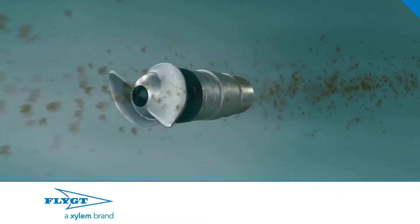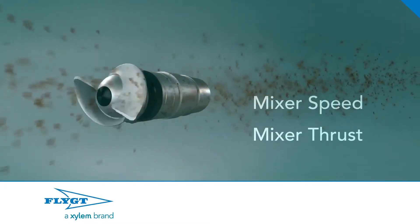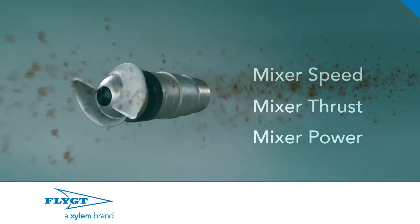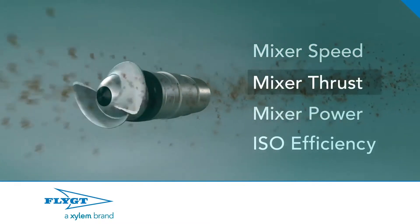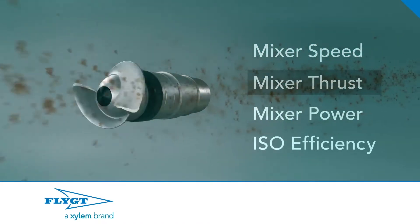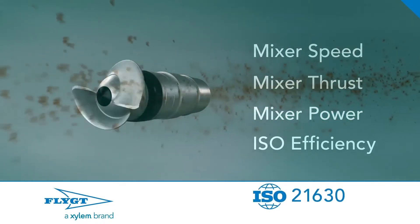To help determine the appropriate mixer, you should look at three key parameters: mixer speed, the thrust it is generating, and the power it is consuming to generate that thrust. This information tells you how hard the mixer is working, how efficiently it is delivering the needed thrust, and of course, what it is costing in energy consumption.